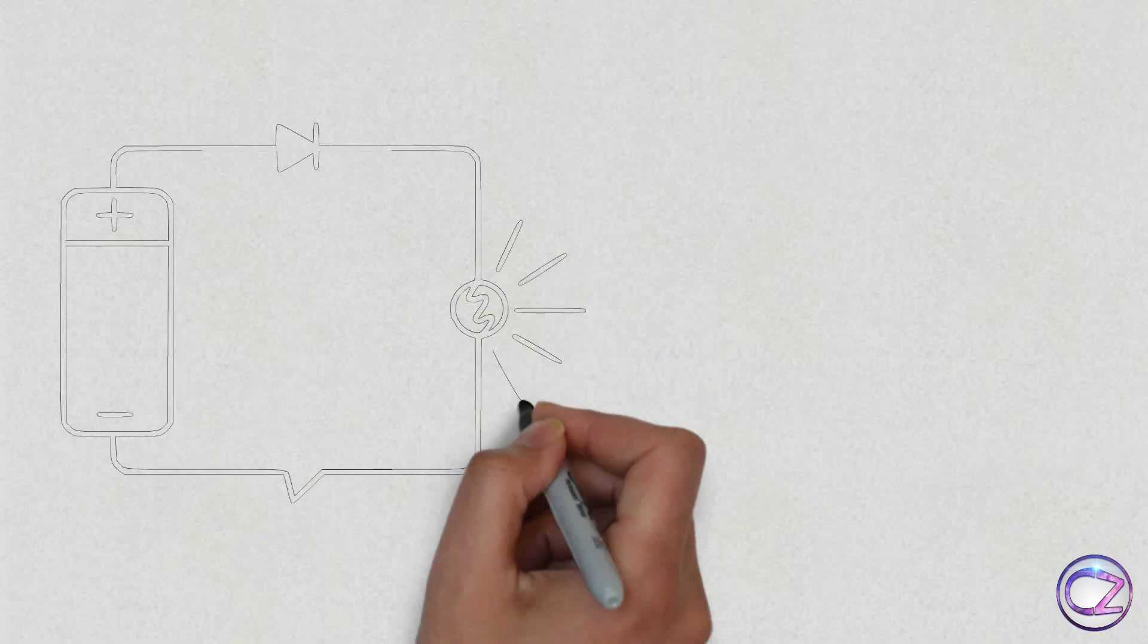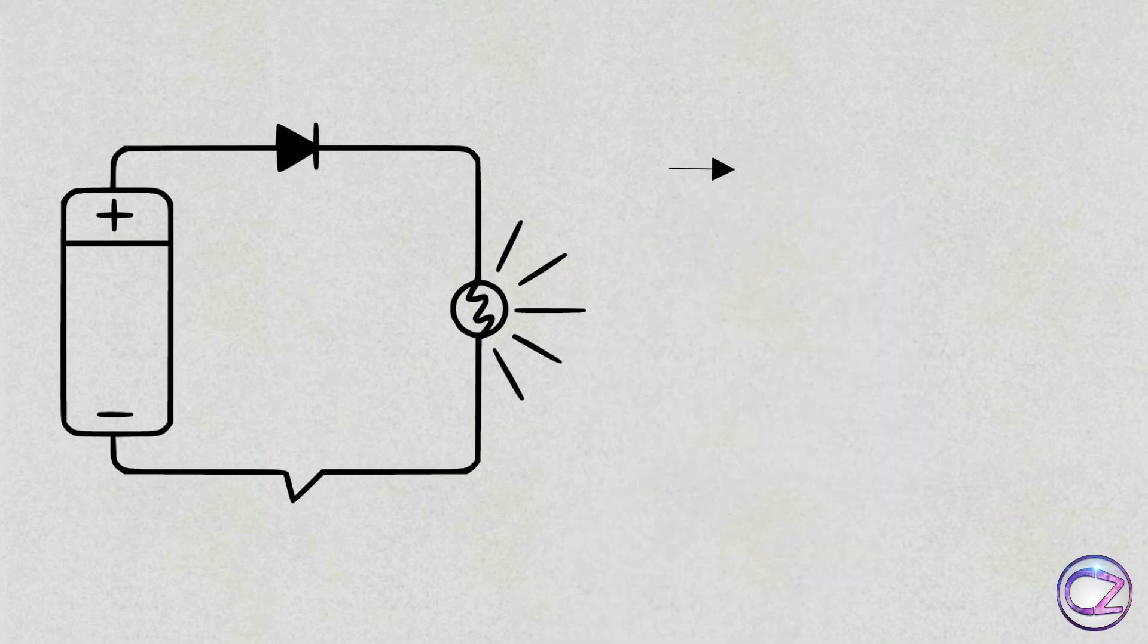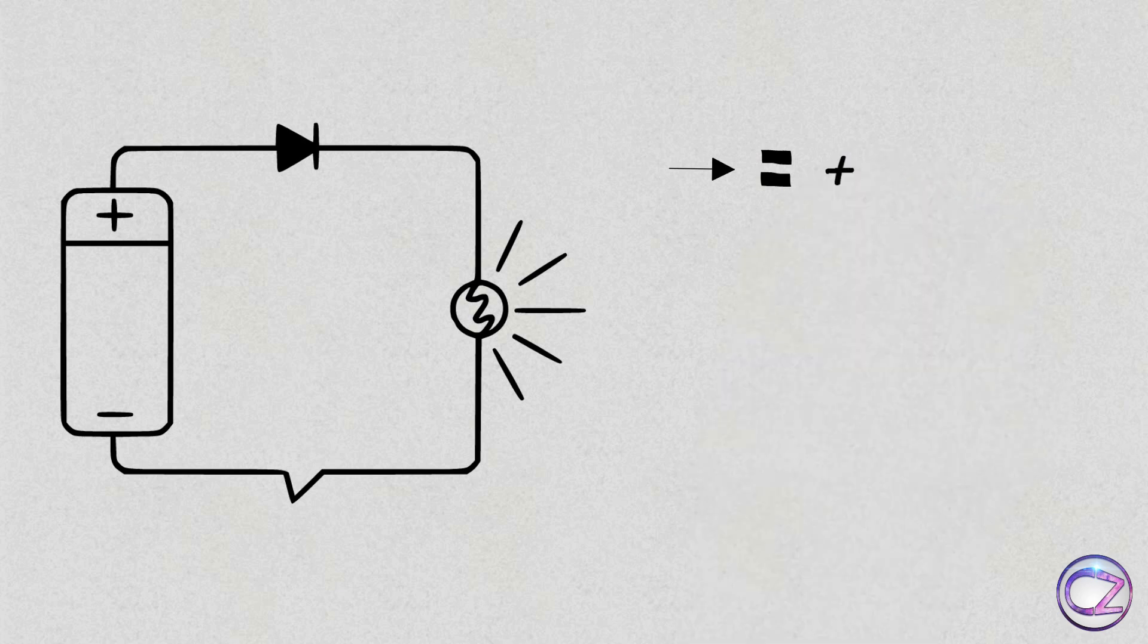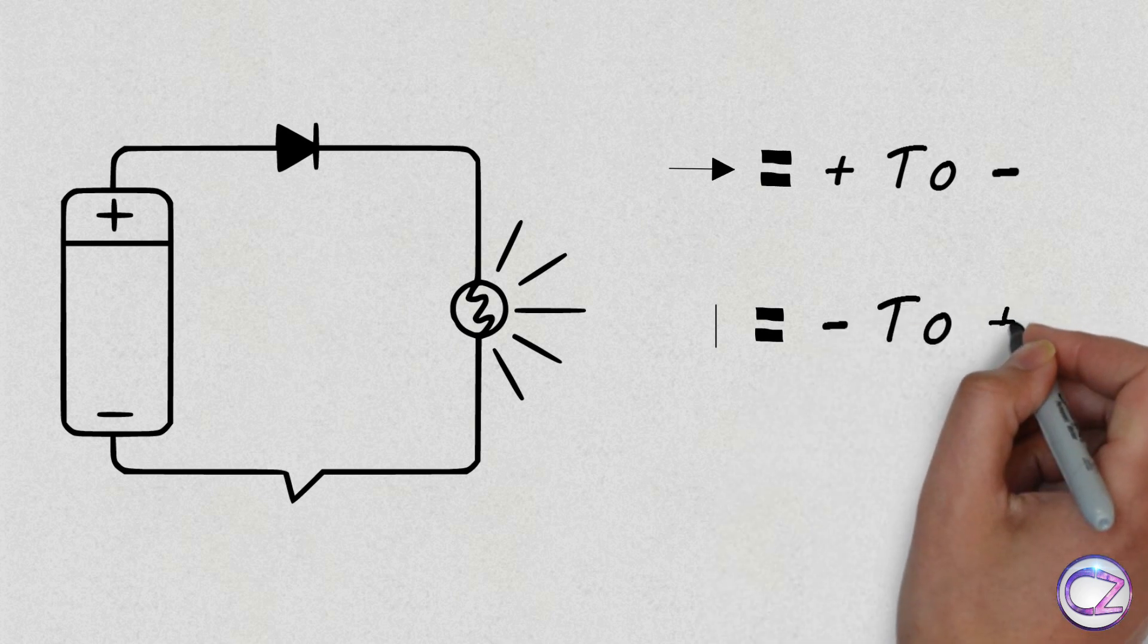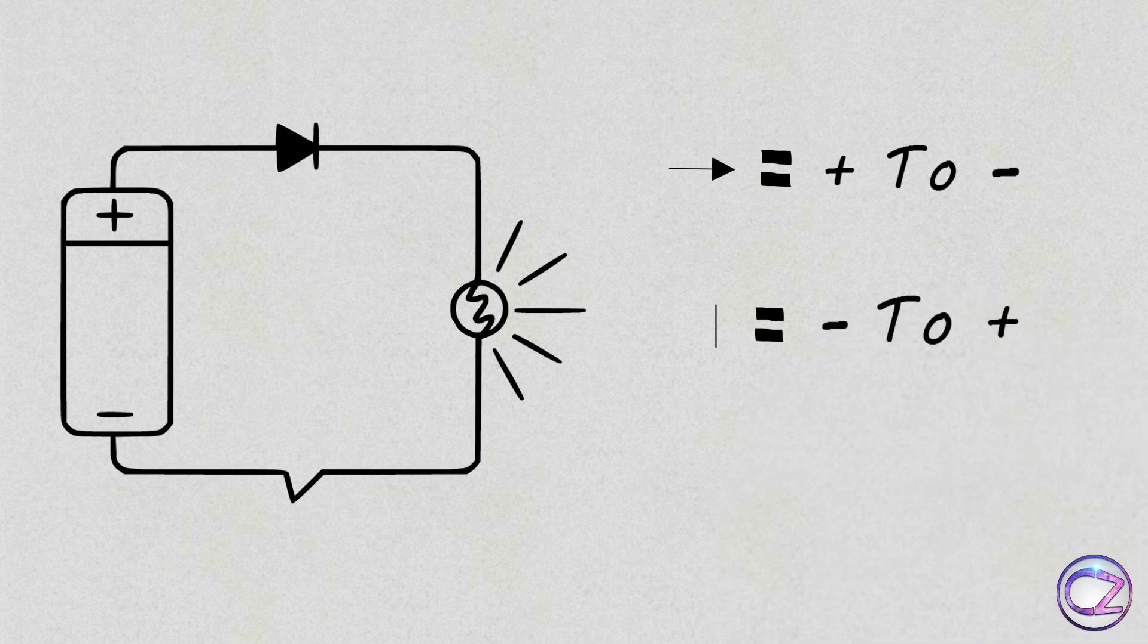See this circuit again. Using conventional current, this arrowhead sign means electrons flow from positive to negative. On the other hand, I'm using the electron flow rule on the same circuit. This barrier sign of the diode means electrons are flowing negative to positive. And you have to notice that both times the lamps are glowing.